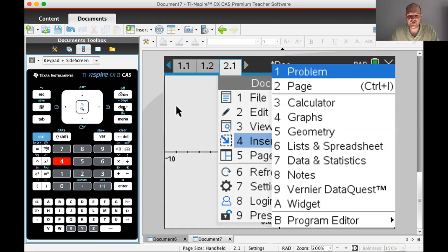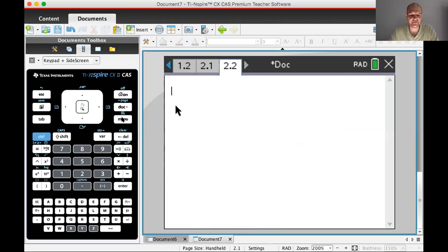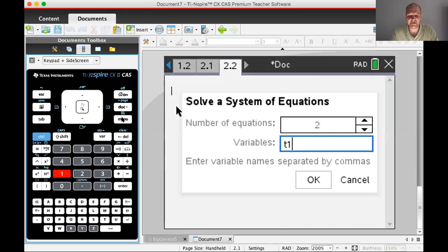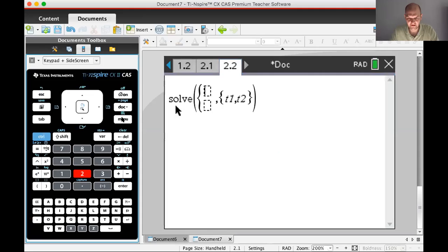Let's insert a calculator page. We got to solve a system. Menu 3, 7, system of equations. Two unknowns, T1 and T2. We know that x1 of T1 should be equal to x2 of T1 plus 2. You've got to pay attention, me. I'm yelling at me, not you. y1 of T1 equals y2 of T1 plus 2. All I had to do is read it off the paper and I failed at that. Press enter.